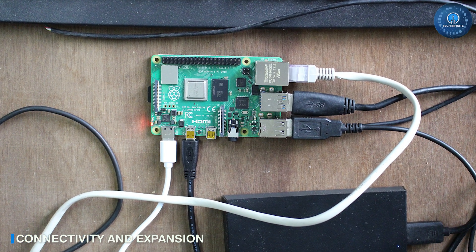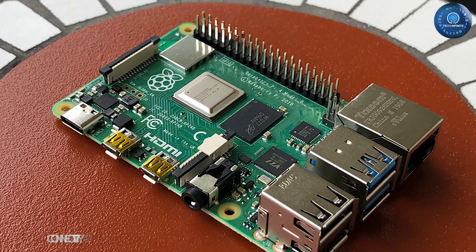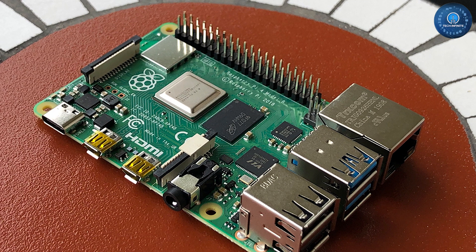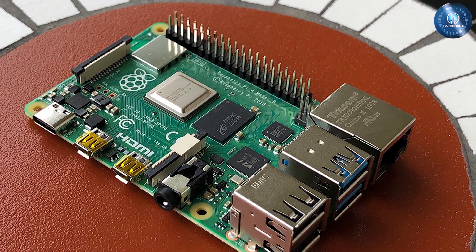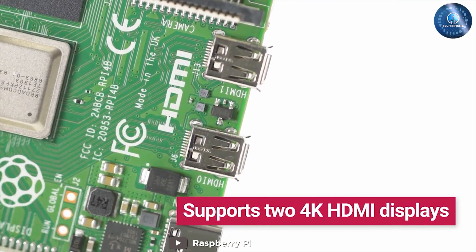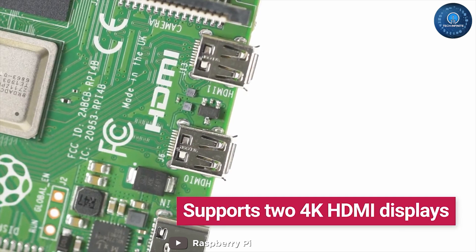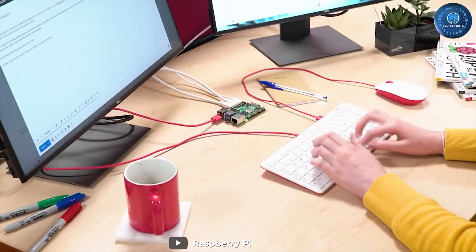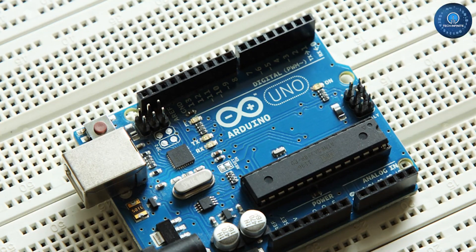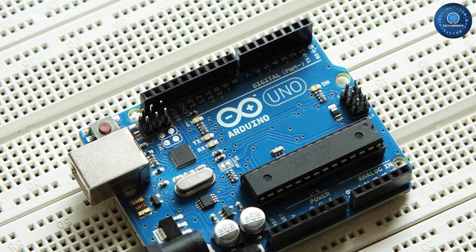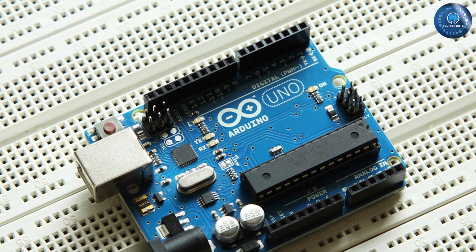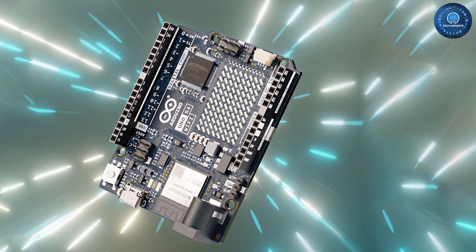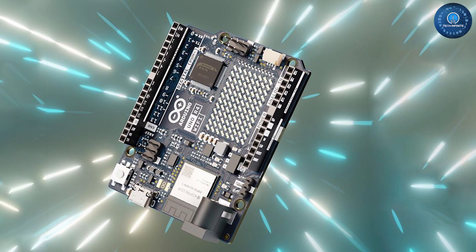In terms of connectivity and expansion options, the Raspberry Pi 4 shines again with multiple USB ports, Ethernet, Wi-Fi, Bluetooth, and GPIO pins. You can connect a wide array of peripherals and accessories. Additionally, the Pi's HDMI output allows you to connect it to a monitor for a full desktop experience.